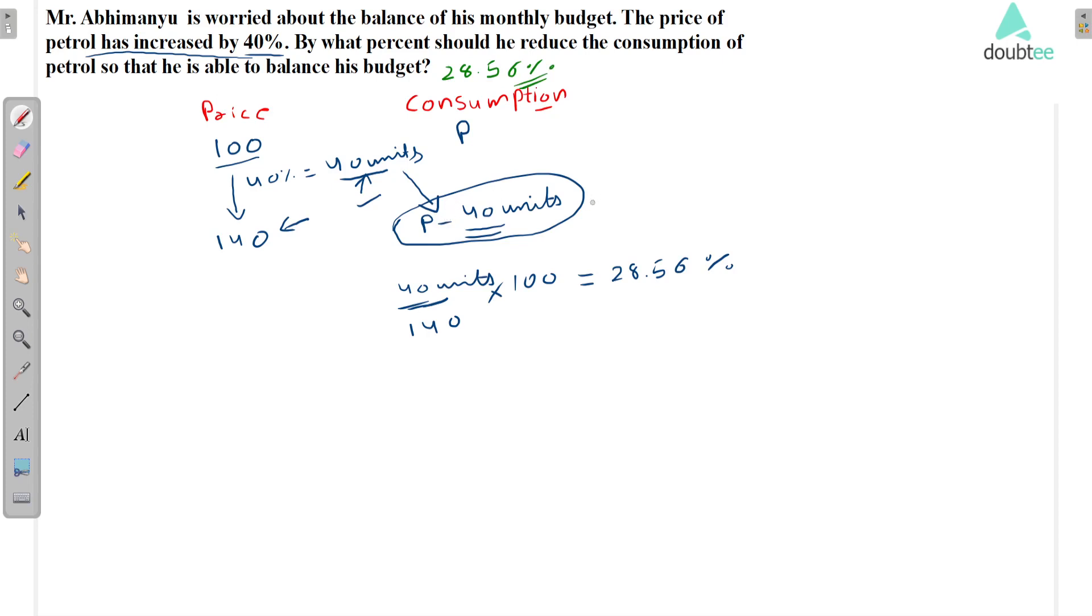So you are thinking about this, why we don't take this value? Actually we want the percentage of reduction. So what we are reducing is 40 units, that's why we take 40 here. And at that time, what is the value of price of petrol? That is 140 units.